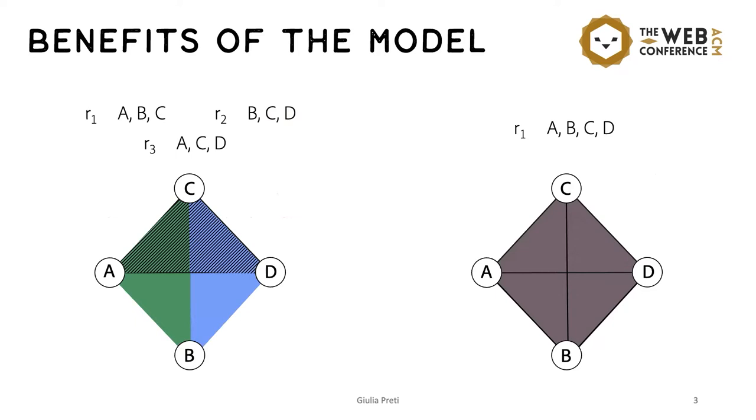If we use graphs, both sets of relations are modeled in the same way using four-clique, despite the fact that they indicate different situations, and so they should be handled in different ways.